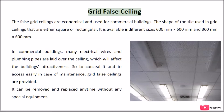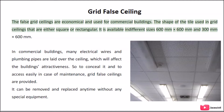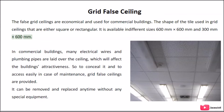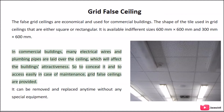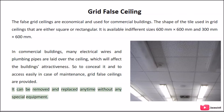Grid False Ceiling: the false grid ceilings are economical and used for commercial buildings. The tiles used in grid ceilings are either square or rectangular, available in different sizes such as 600 mm × 600 mm and 300 mm × 600 mm. In commercial buildings, many electrical wires and plumbing pipes are laid over the ceiling, which affects the building's attractiveness. So to conceal them and allow easy access for maintenance, grid false ceilings are provided. They can be removed and replaced any time without any special equipment.